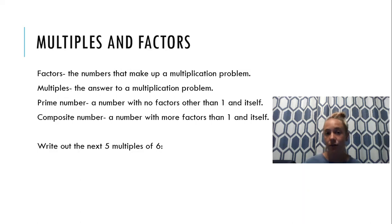6 times 4 is 24. 6 times 5 is 30. And 6 times 6 is 36. Those are my next 5 multiples: 12, 18, 24, 30, and 36.